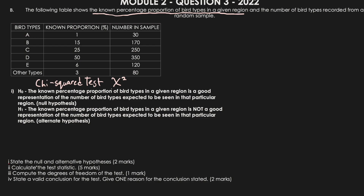The second thing we need to do is calculate the test statistic. To do that, we need to identify the expected values and the observed values. The number of bird types recorded from the random sample are the observed values. The known percentage proportions give us the expected proportions, from which we work out the actual expected values.